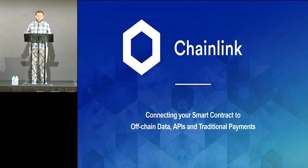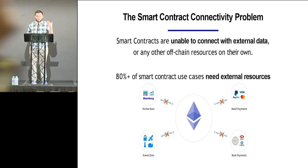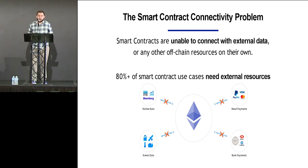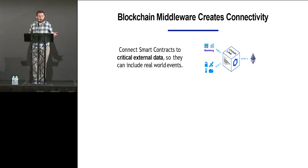A smart contract also needs to be able to pay and settle in formats that users want to receive. The fundamental problem we need to solve to get smart contracts from just doing tokens to being used as digital agreements — for insurance, securities, and many other forms — is the smart contract connectivity problem. Smart contracts live within their own network and only have data already in that network, so they can only access token movements without any external data about market prices, IoT events, GPS, or shipping data.